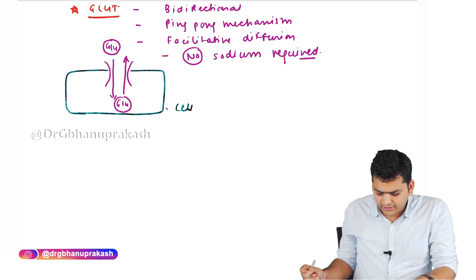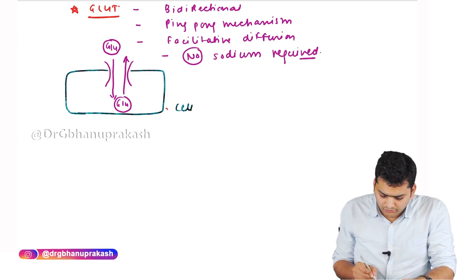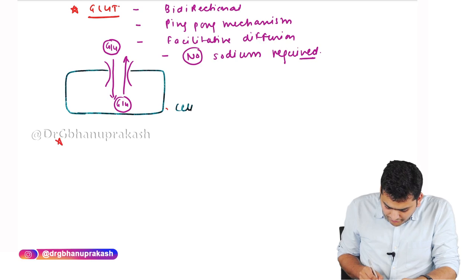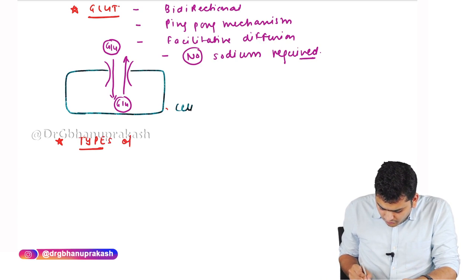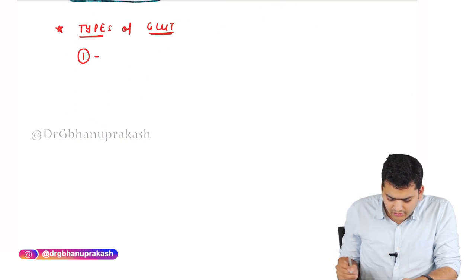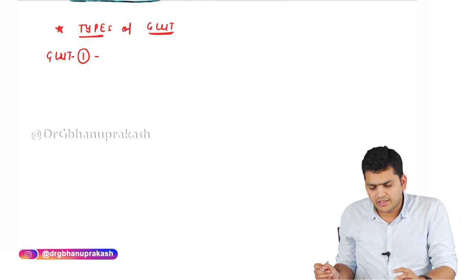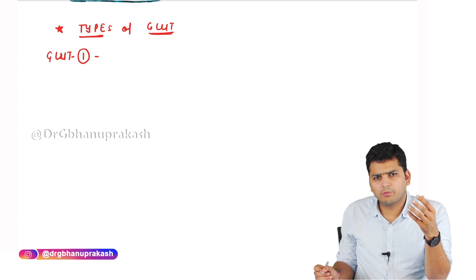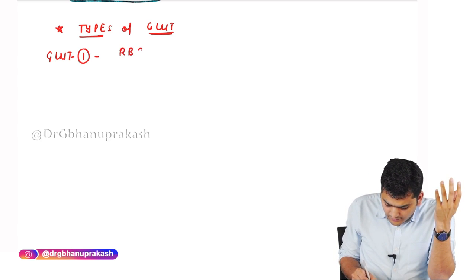These are the basic details of how GLUT works. When it comes to the types of GLUT, the list is very long — there are around 12 types — but we will discuss the important ones. GLUT 1 is found in RBCs, the brain, and the placenta.